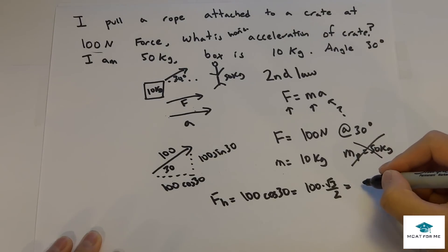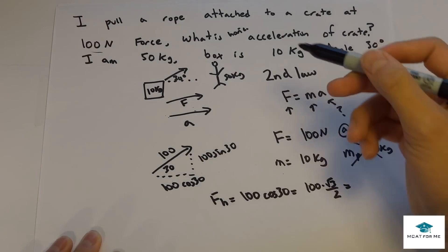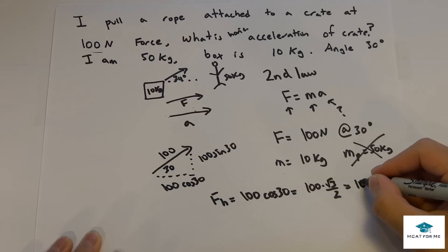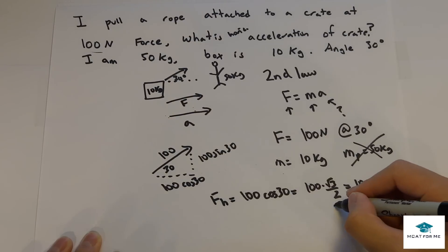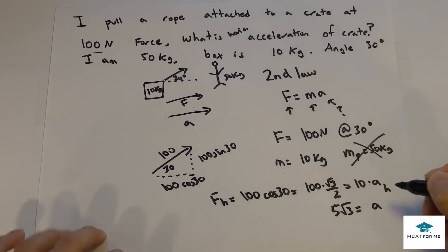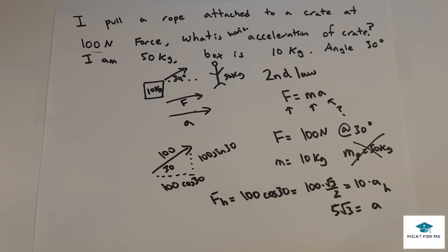And this equals mass times acceleration. And this is the mass of the box which is 10 kilograms, and then the acceleration in the horizontal direction. So we know the final answer will be 5 square root 3 is the acceleration in the horizontal direction of the crate.